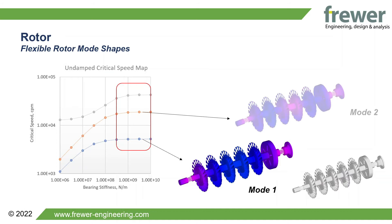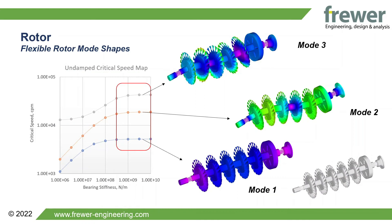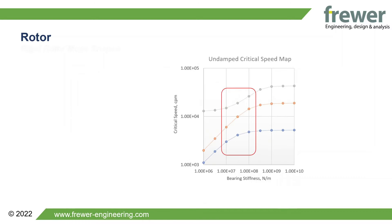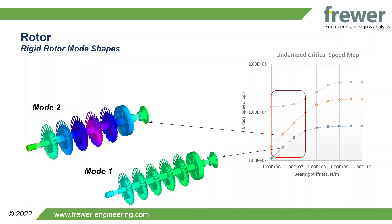Here you can see the first three modes of a flexible rotor system and how the mode shape changes with frequency. In contrast, by reducing bearing stiffness, the mode shapes change and the rotor acts as a rigid rotor system.